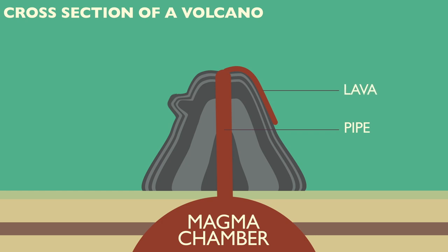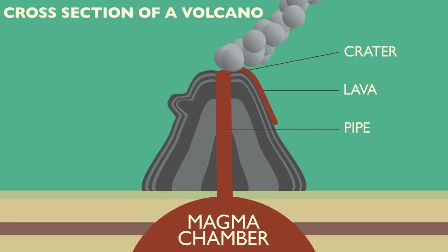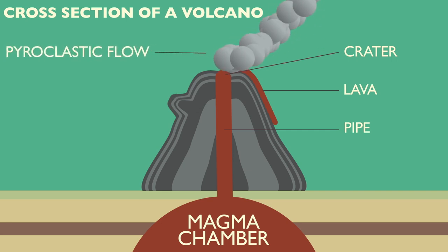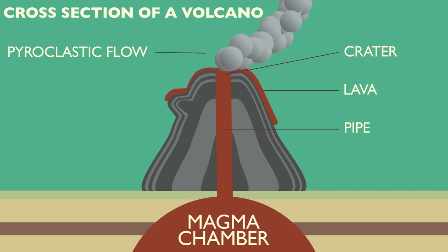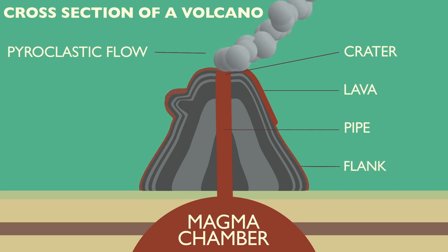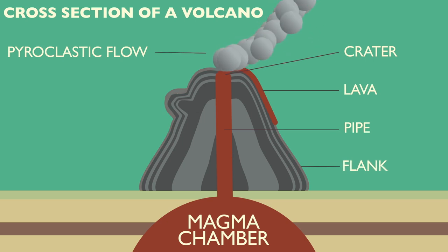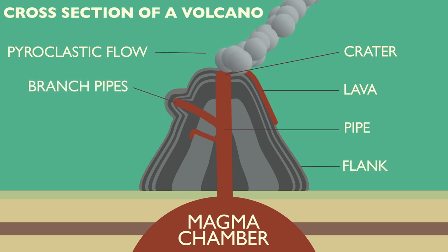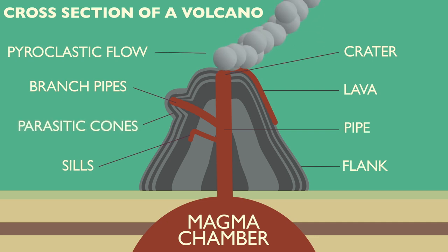Eruptions take place throughout the crater and are accompanied by a toxic cloud of gas, ash, and rock particles — together called pyroclastic flow. Over many eruptions, layers of lava and ash build up, forming the flank of the volcano. Occasionally, branch pipes, sills, and parasitic cones are formed.